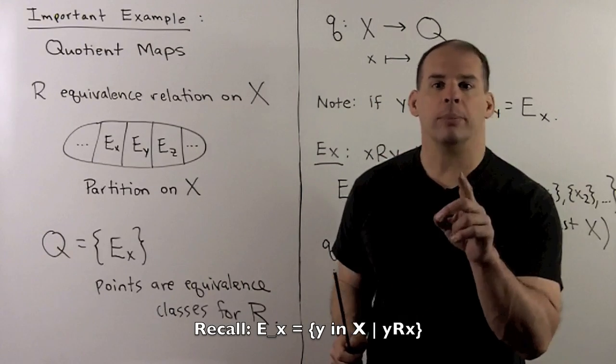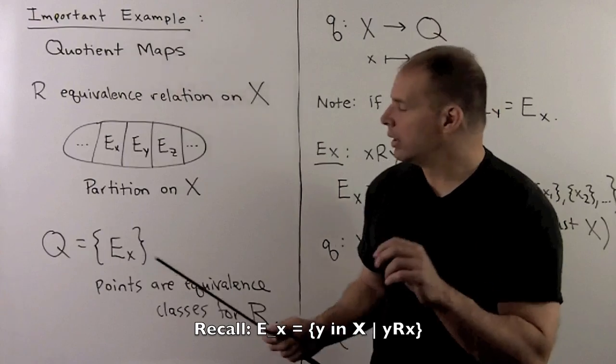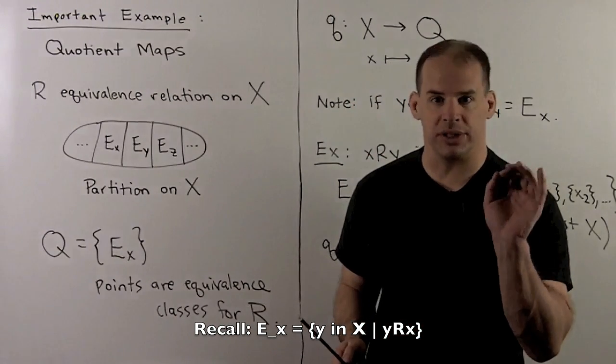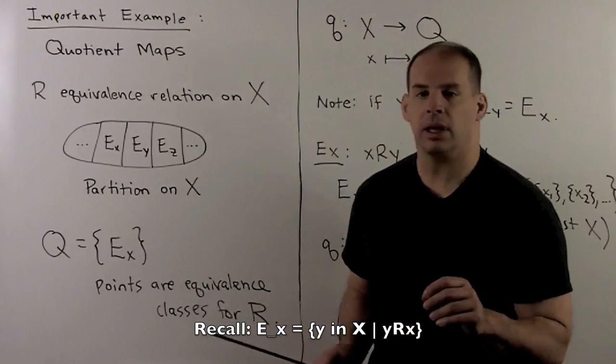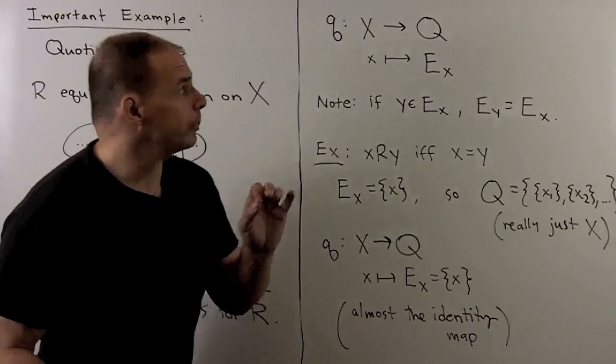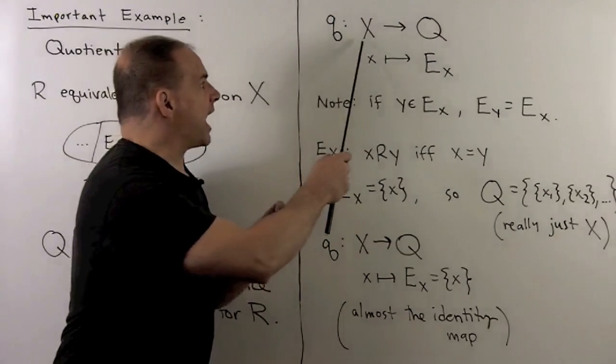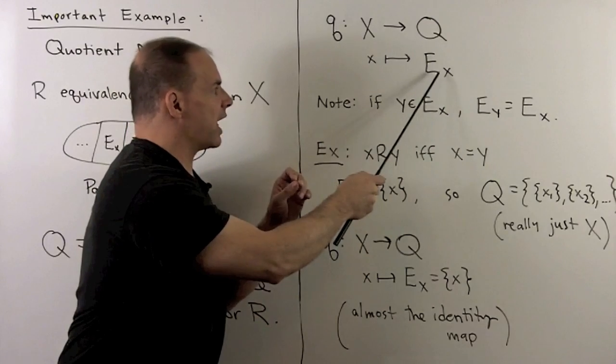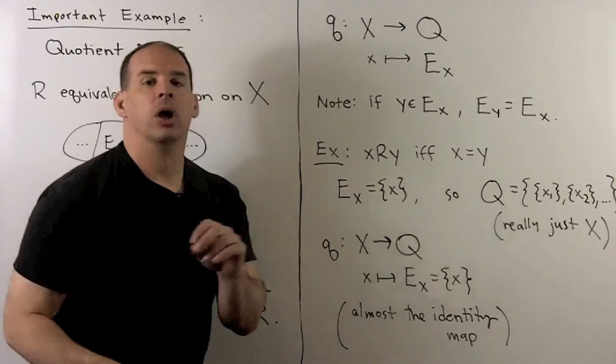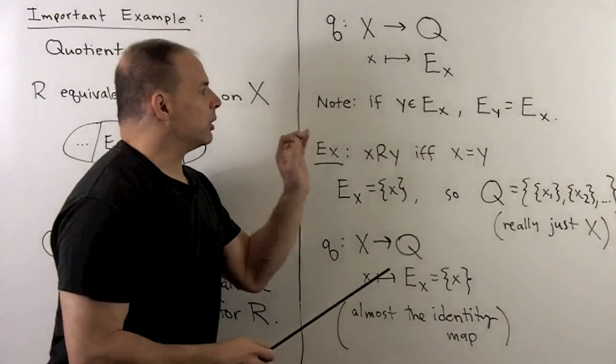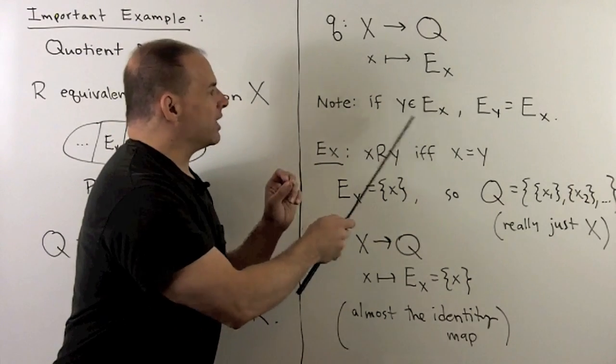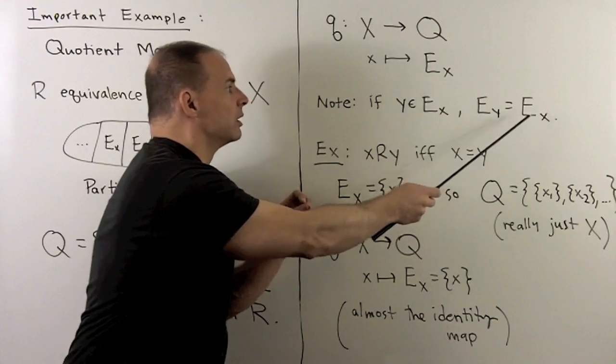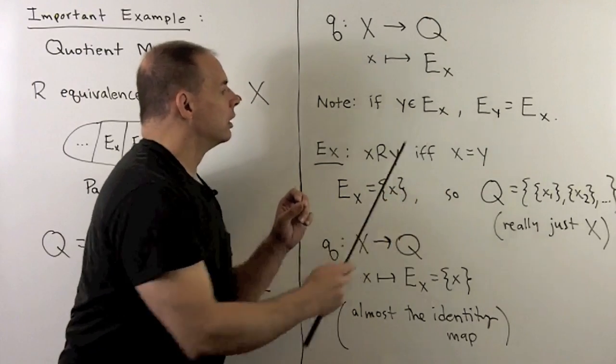Now, for the set we use, we're going to have Q equal to the set where the points are just the equivalence classes. Now, we'll form the quotient map. It's going to go from our set X to the set of equivalence classes just by sending each X to its equivalence class. Note here, we have our relabeling rule, which says if Y is in the equivalence class for X, then the equivalence class for Y is equal to the equivalence class for X.